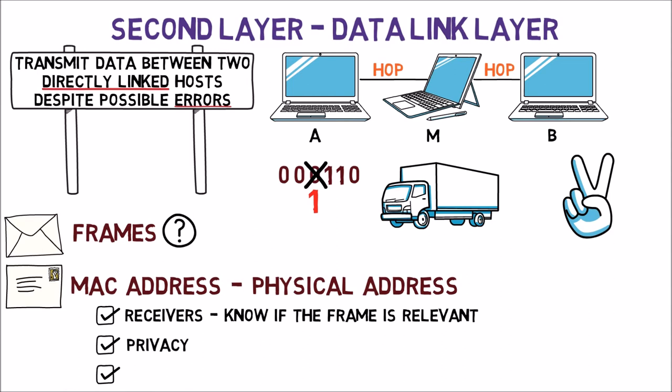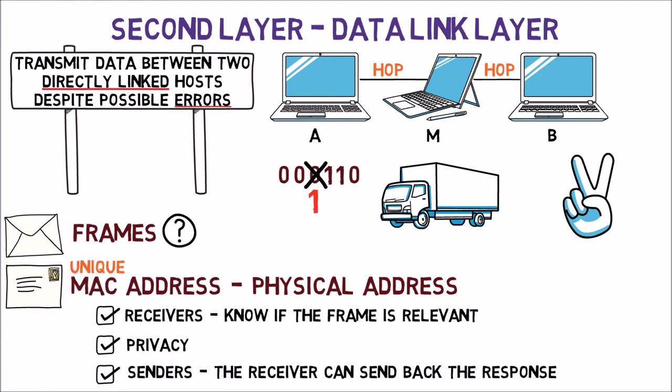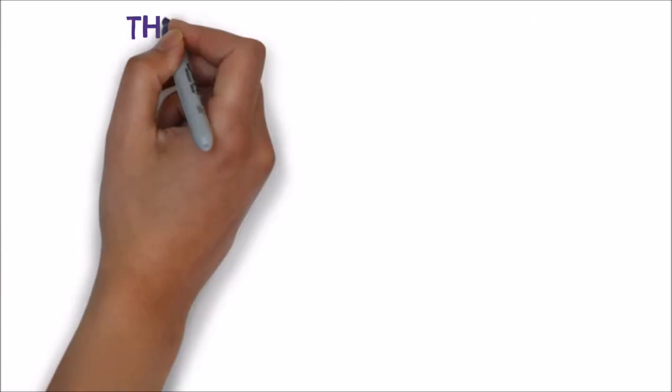Third, as a sender, I would like the receiver to know who sent the frame. That way, the receiver will be able to send his or her response back to me and not to someone else. Note that we would like the addresses to be unique, that is, we want one address to identify a single device. That way, we know that if we send a message to this address, it will be sent to the intended device only.